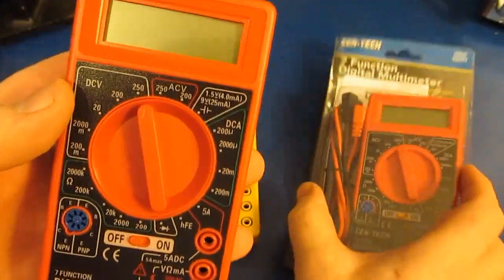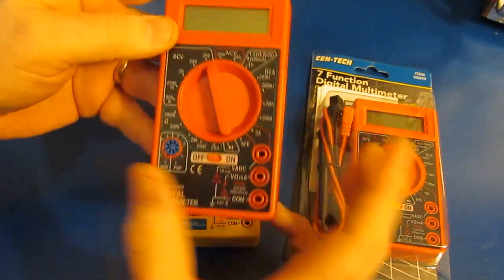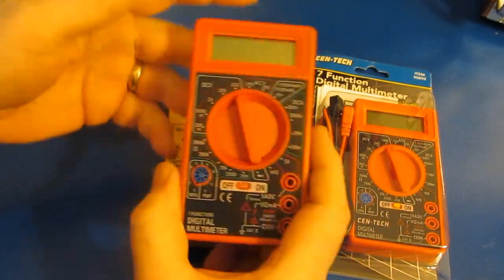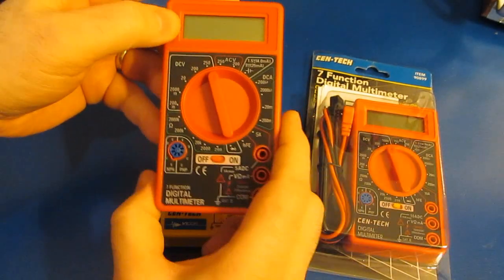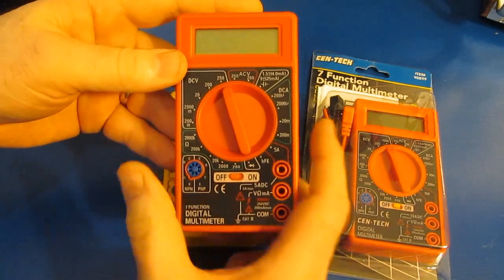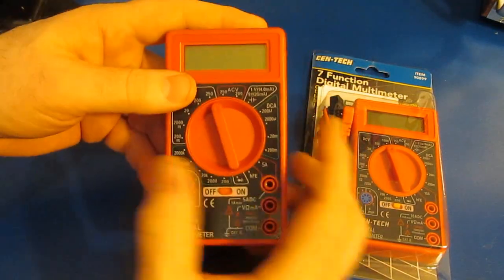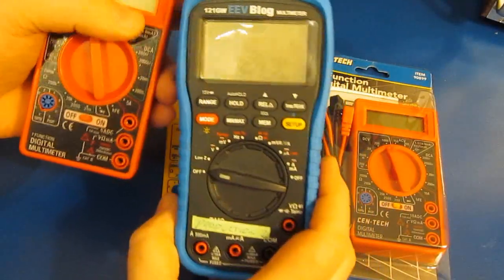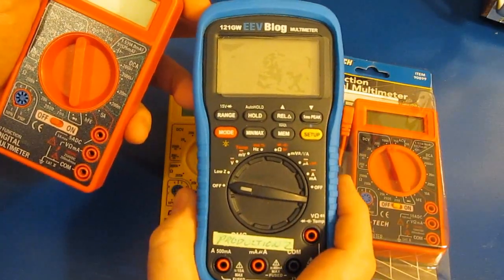He also wanted to know if the hardware changed between these two meters when they changed the voltage rating. He also made this kind of odd statement, which was a 2000 count meter, which these happen to be, should be able to read 2000 volts. I don't really understand that comment.